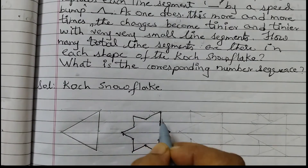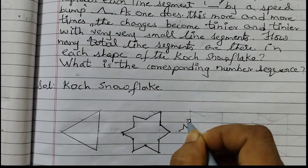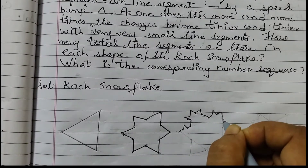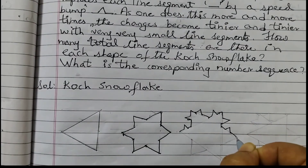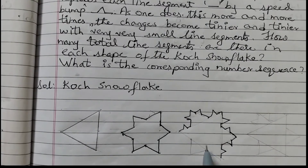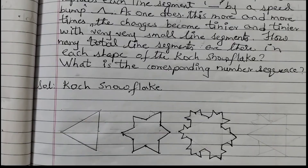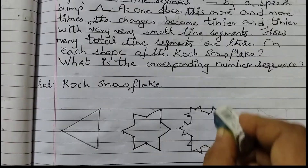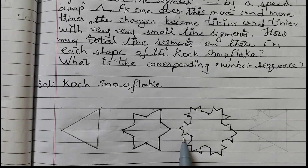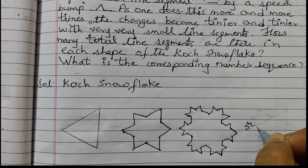To draw the next shape in the sequence, you need to draw speed bumps — that means small triangles on each of the line segments. Each line segment will have these small triangles. I have used pencil to draw a rough figure because it becomes easier to draw; you can also do the same. This is how the third shape looks like. To draw the next shape, you need to draw small speed bumps on each of the line segments, which is a little difficult to draw.